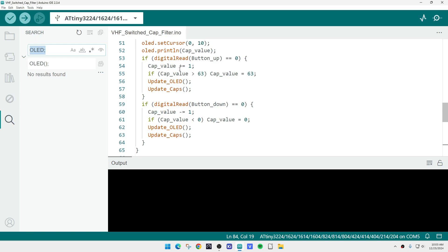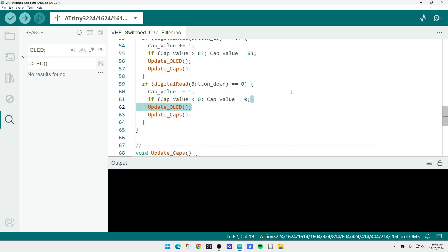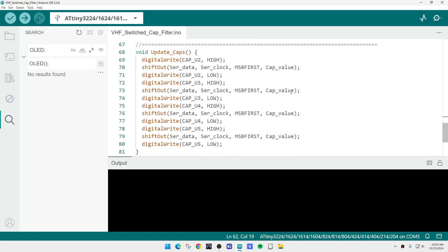It's either going to be the up button or the down button. The up button gets a plus one, the down button gets a minus one, and then you cap things at 63 or zero, and then update the display, update the caps.